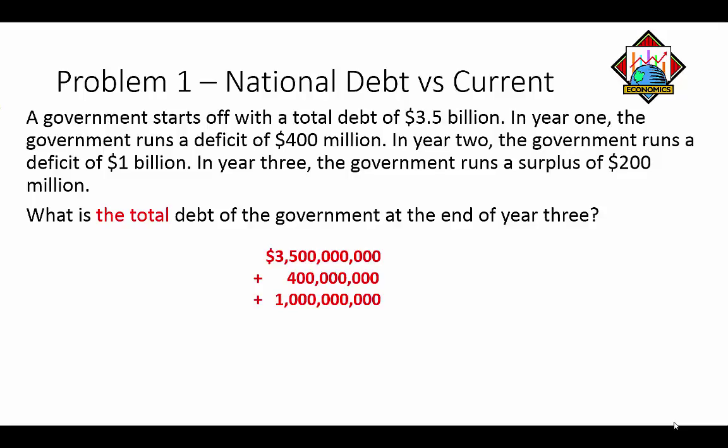In year two we're going to add to the debt again with another billion dollar deficit. Deficits are an annual one-year circumstance; total debt is cumulative. Then in year three we have a surplus, which is going to subtract from our debt, giving us a total of 4.7 billion dollars in debt.